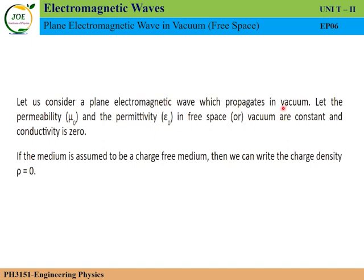For vacuum, we can use free space. The permittivity of vacuum is a constant. In vacuum, the conductivity is zero — there is no conductivity in free space.